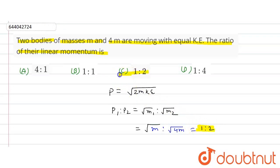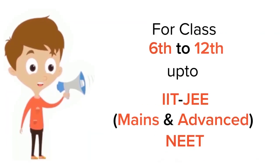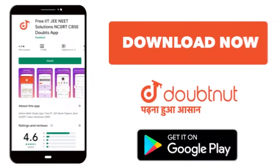So see, option C is the correct option. Thank you. For class 6 to 12, IIT-JEE and NEET level, trusted by more than 5 crore students, download Doubtnet app today.